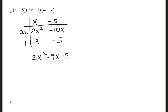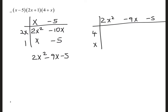Now I'm going to take what I got — 2x squared minus 9x minus 5 — and multiply that by 4x plus x. This becomes 8x squared minus 36x minus 20, and this gives 2x cubed, minus 9x squared, minus 5x.